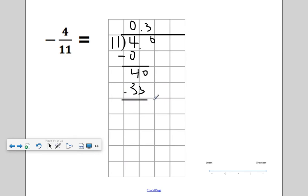So 40 minus 33 is 7. Add another 0. I bring it down. How many groups of 11 go into 70? 60, 6 groups. 70 minus 66 is 4. And this will be a repeating decimal.